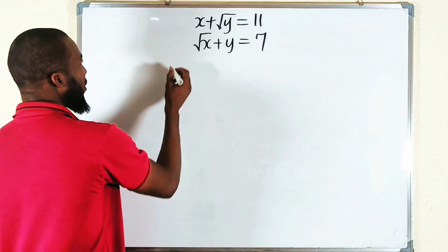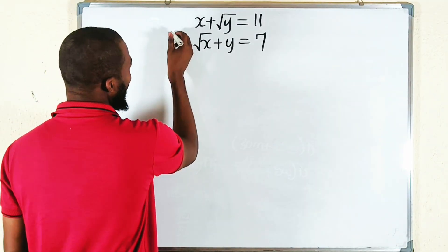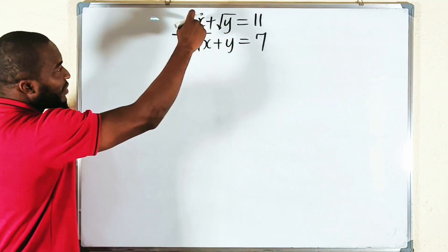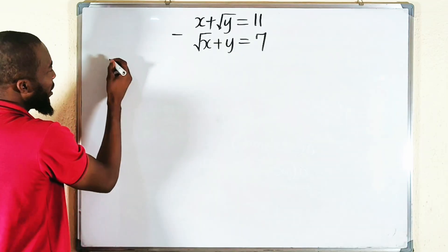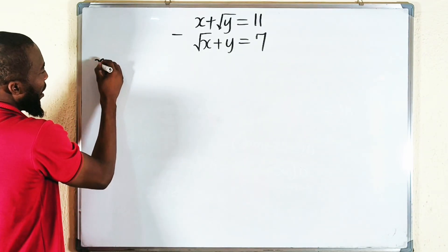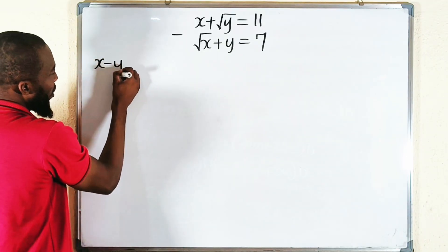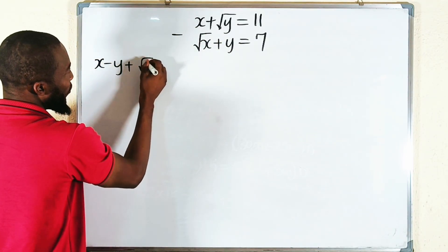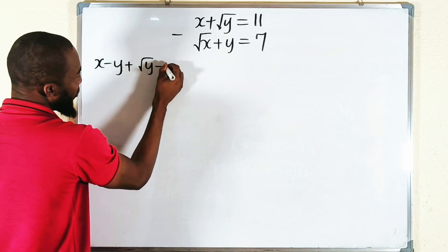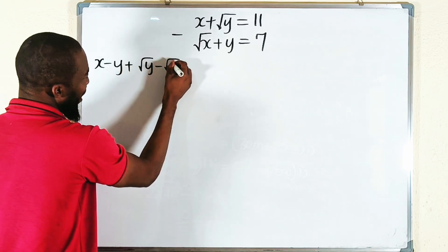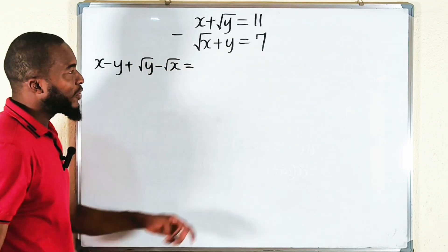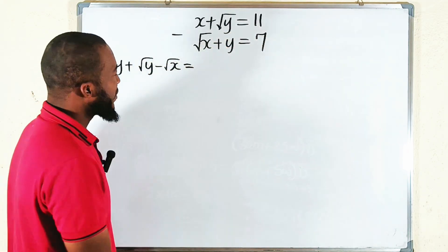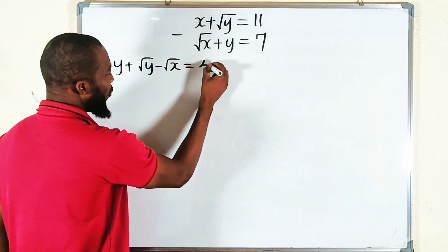Instead, let us subtract. If you subtract the equations from the left-hand side — x minus y plus square root of y minus square root of x — this equals 11 minus 7, which is 4.